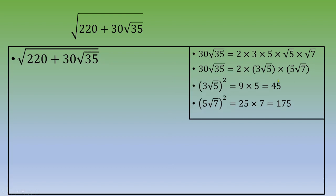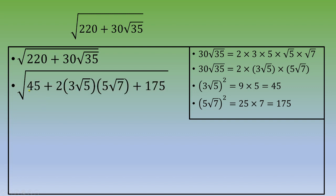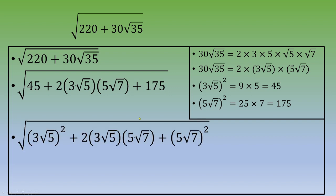So below the root we have 45 plus 2 times 3 square root of 5 times 5 square root of 7, plus 175. We can recognize this as (3√5)² plus 2 times 3√5 times 5√7 plus (5√7)², which matches the remarkable identity a² + 2ab + b².